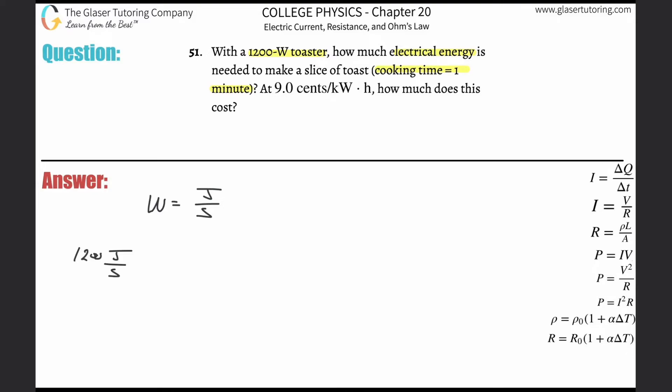It's going to consume 1200 joules every single second. Now it wants to know how much electrical energy is needed to make a slice of toast if the cooking time for your toast is a minute. So if you know this appliance is going to utilize 1200 joules for every single second and you want to cook a piece of toast that's going to take a minute, we're going to have to multiply this thing by 60 seconds.